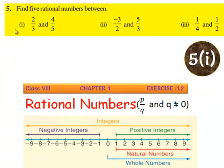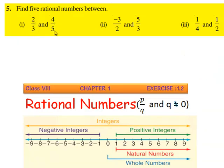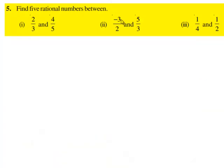Now let us move on to the fifth question. Find 5 rational numbers between: (i) 2/3 and 4/5, (ii) -3/2 and 5/3, (iii) 1/4 and 1/2. Let us move to the solution.